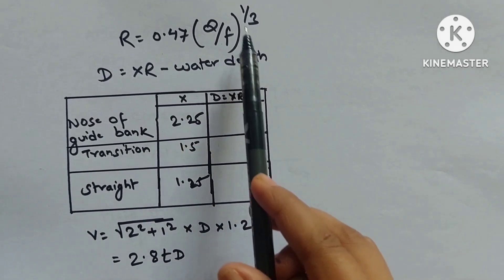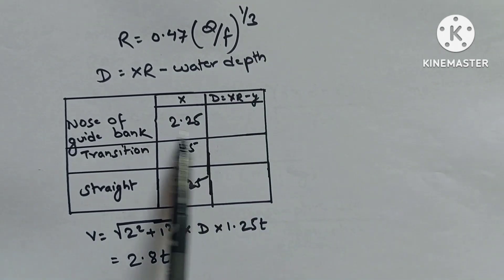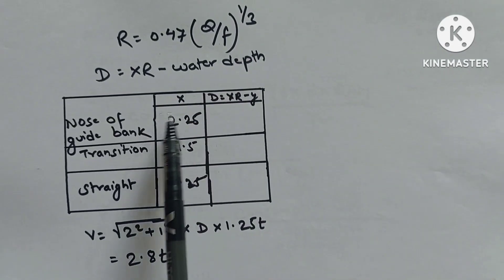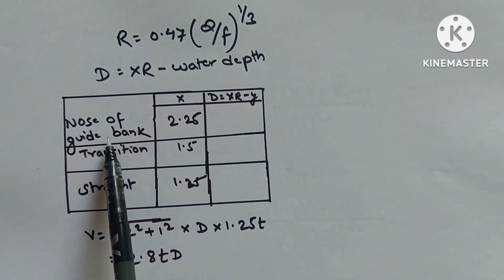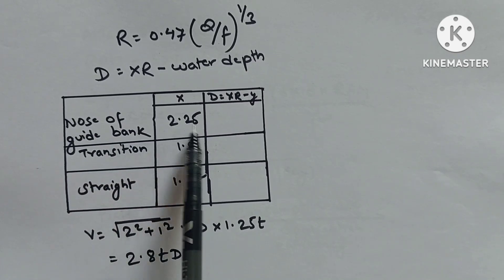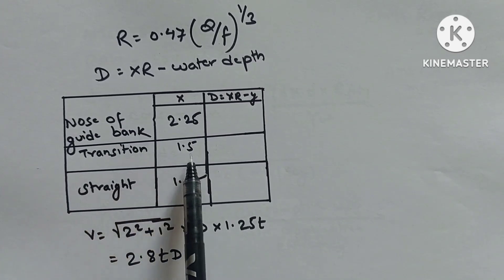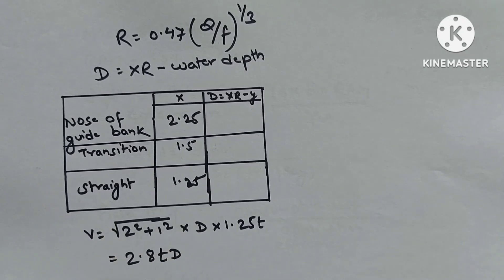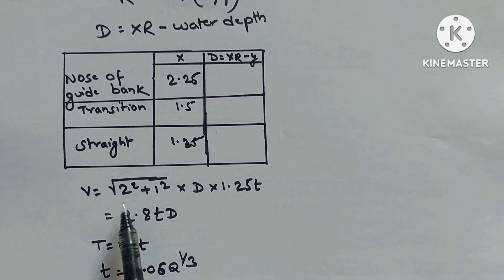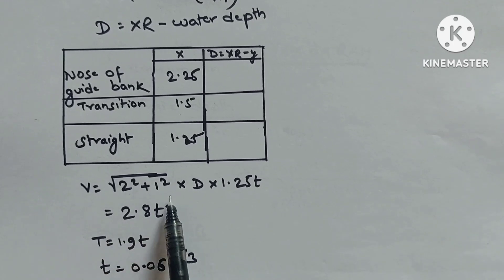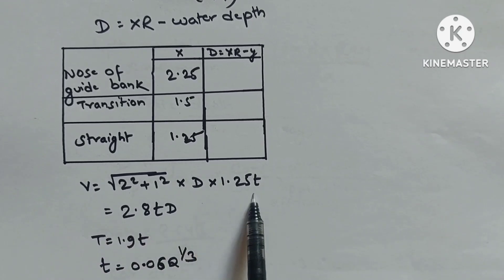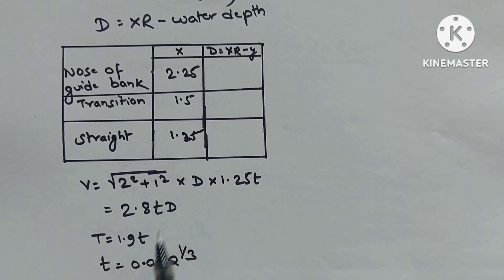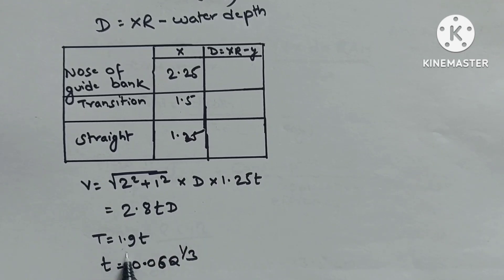T = 0.06Q^(1/3), R = 0.47(Q/f)^(1/3), D = xR (water depth), where x = 2.25 at nose of guide bund, 1.5 in transition, 1.25 in straight section. Volume of stone = √(2² + 1²) × D × 1.25T = 2.8TD, and capital T = 1.9t.